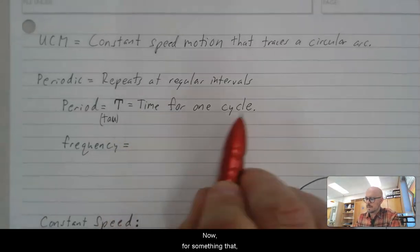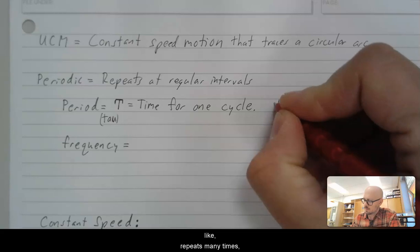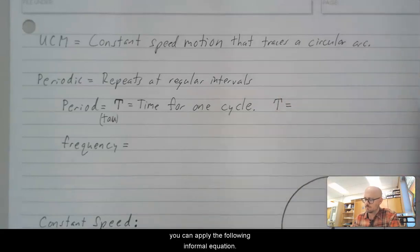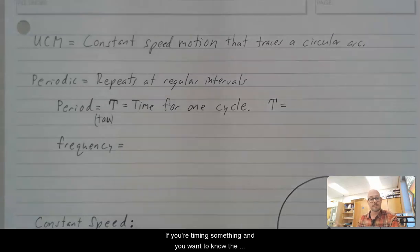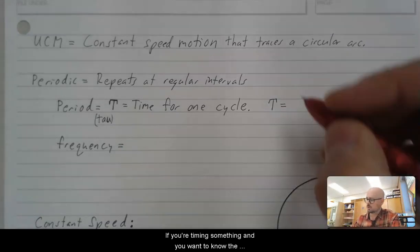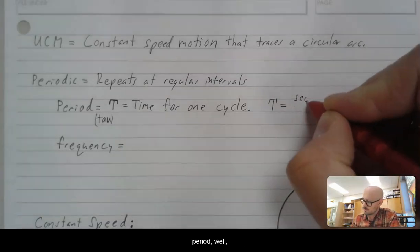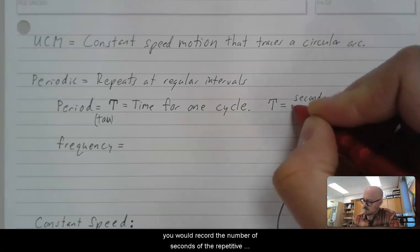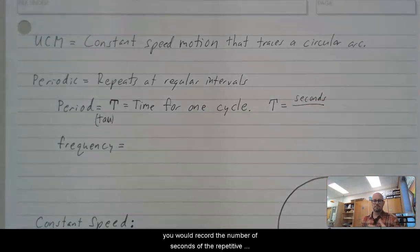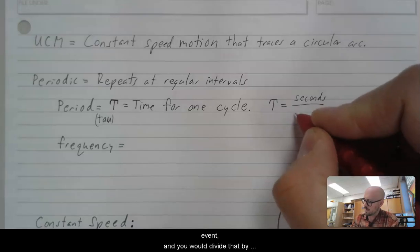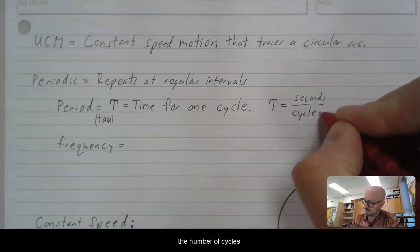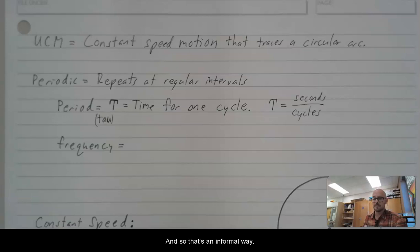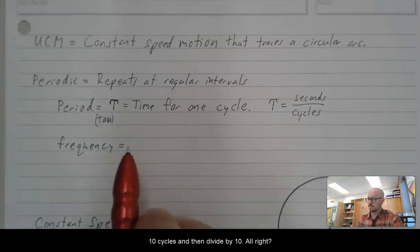Now, for something that repeats many times, you can apply the following informal equation. If you're timing something and you want to know the period, you would record the number of seconds of the repetitive event and divide that by the number of cycles. And so that's an informal way for measuring period. You can just measure the amount of time it takes for like 10 cycles and then divide by 10.